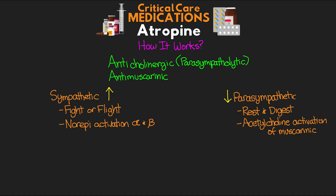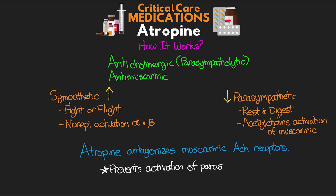A good example of this is that sympathetic activation of the heart is going to increase our heart rate, versus parasympathetic activation is going to decrease our heart rate. The way atropine works is it actually antagonizes the muscarinic acetylcholine receptors, reversibly binding to those receptors so that they're unavailable for acetylcholine to activate. By doing this, it actually prevents the activation of the parasympathetic nervous system, and it's this blockage of activation that gives us its uses.